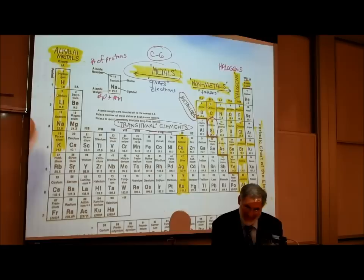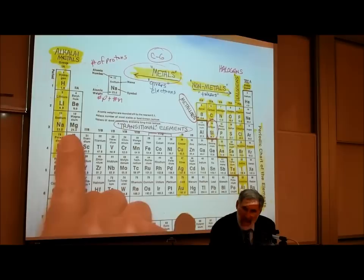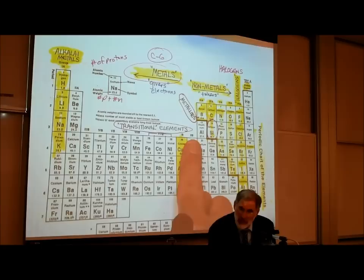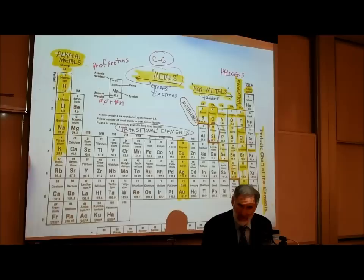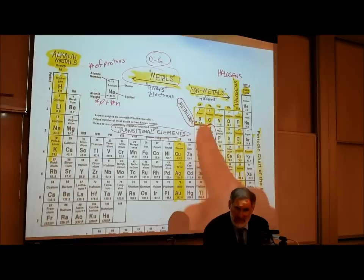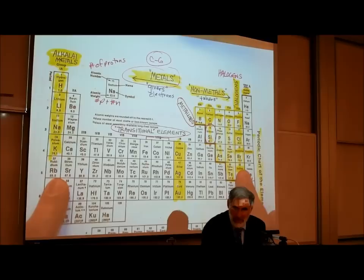The ones on the far left are the most metallic — they most readily give away electrons. As you transition more to the right, they give away electrons less freely — they're called the transitional elements. With the takers or non-metals, the biggest takers of them all are the halogens. The biggest givers are in column one, the biggest takers are in column seven.